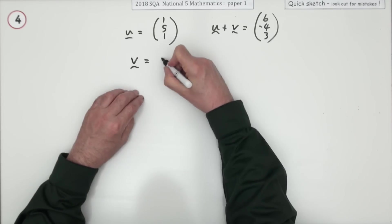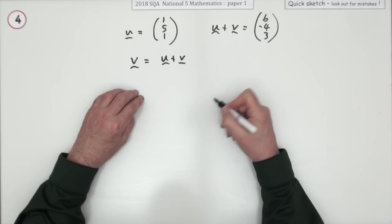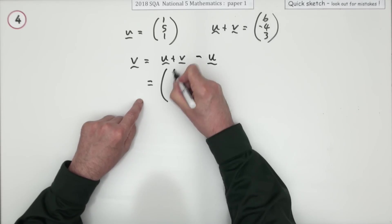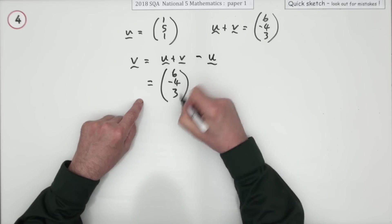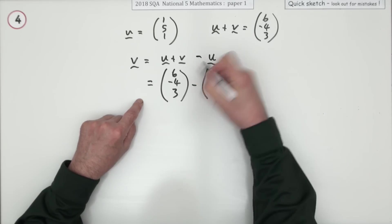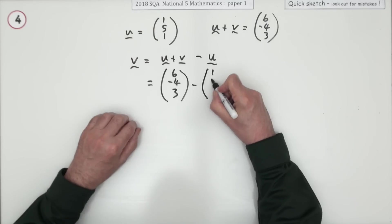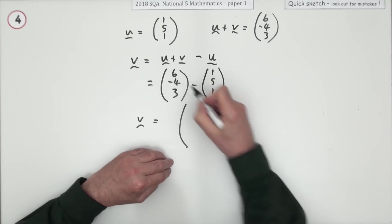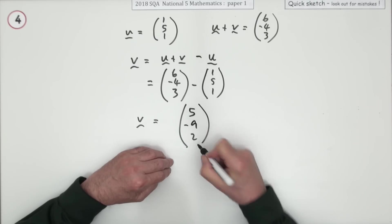V would have to be U plus V, take away the U. So it's going to be U plus V. It's just what you would do by inspection, only setting it out formally. Take away this one. So that finally V is going to be 6 take away 1, 5. Negative 4 take away 5, negative 9. 3 take away 1, 2. There you go.